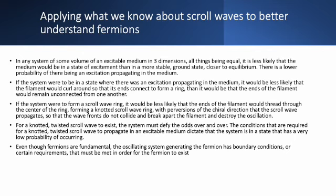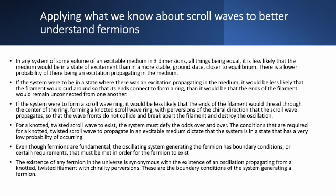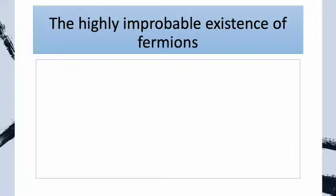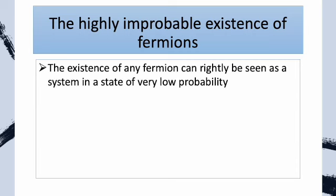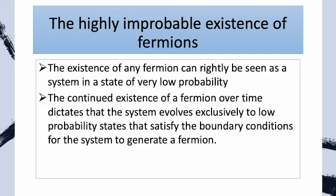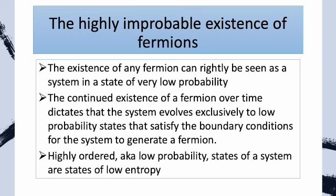Even though fermions are fundamental, the oscillating system generating the fermion has boundary conditions — certain requirements that must be met for the fermion to exist. The existence of any fermion in the universe is synonymous with the existence of an oscillation propagating from a knotted, twisted filament with chirality perversions. These are the boundary conditions of the system generating a fermion. The existence of any fermion can rightly be seen as a system in a state of very low probability. The continued existence of a fermion over time dictates that the system evolves exclusively to low-probability states that satisfy the boundary conditions for the system to generate a fermion. The oscillation is a dynamic system that is always evolving and changing to different states. Because the particle has a continuous existence in the universe over time, every single state that the oscillation evolves to must be one that satisfies the boundary conditions for it to generate a fermion. Highly ordered or low-probability states of a system are states of low entropy.